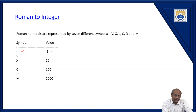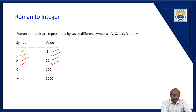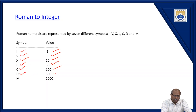I stands for value 1. Similarly, V is 5, X is 10, L is 50. The Roman people use various symbols and for every symbol there is a corresponding value. C is 100, D is 500, and M is 1000.